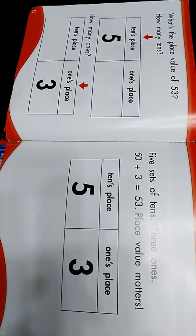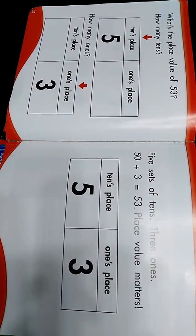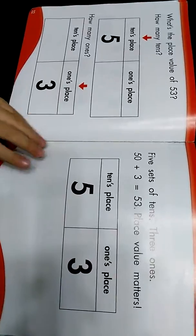5 sets of 10, 3 ones. 50 plus 3 equals 53. Place value matters.